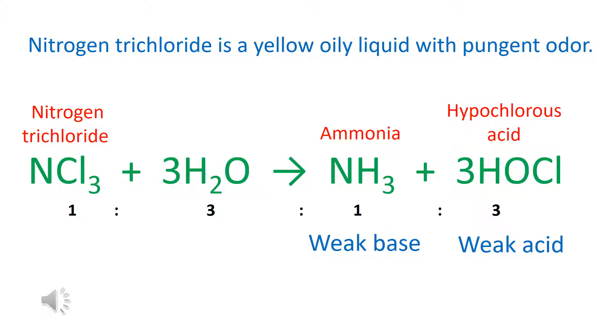Nitrogen trichloride is a yellow oily liquid, ammonia is a basic gas, and hypochlorous acid is a weak acid.